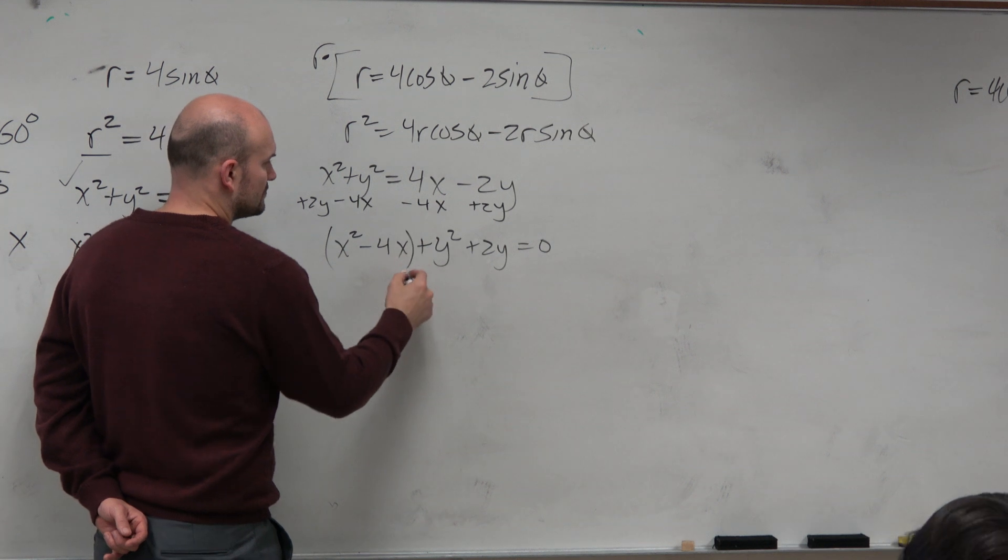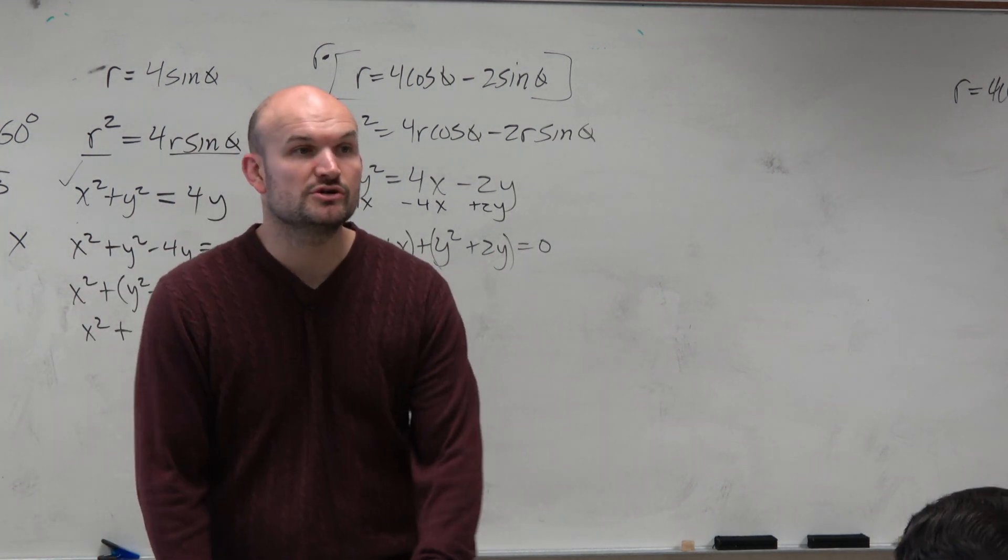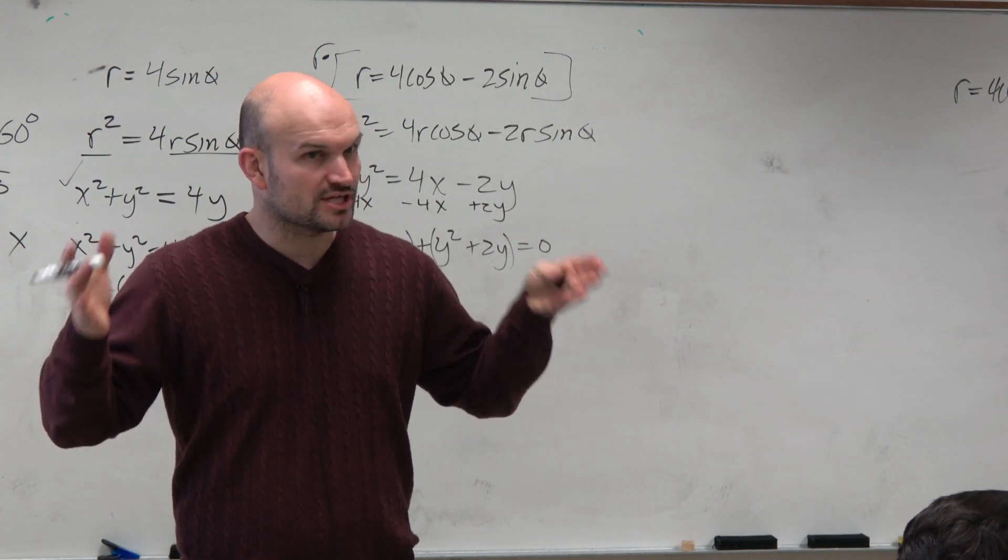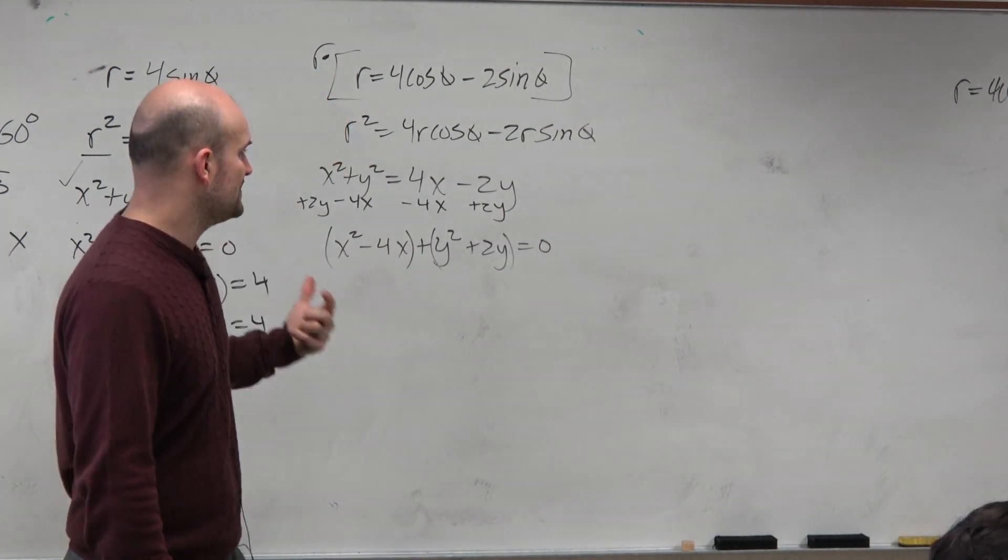So now we have two expressions in terms of x's and y's. And what we want to do is we want to create perfect squared trinomials, because perfect squared trinomials can be factored down into binomial squared.